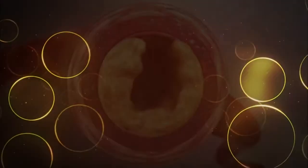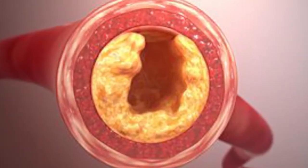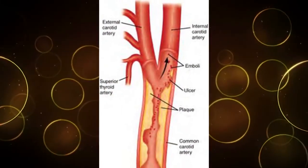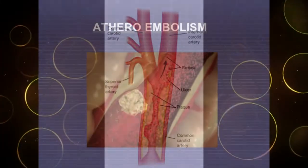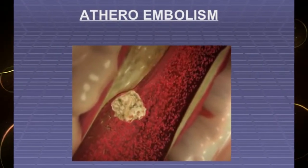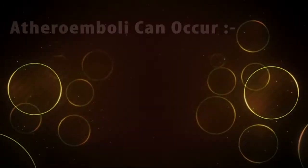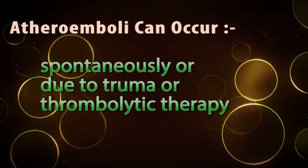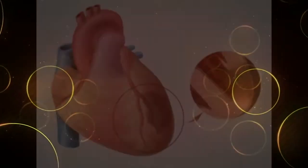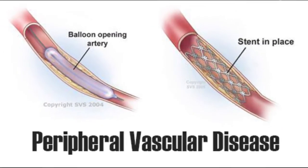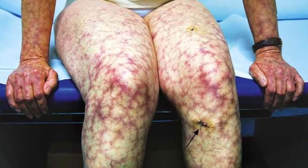Atheroembolism, also called cholesterol embolism, occurs when cholesterol is released, usually from atherosclerotic plaques, and travels as an embolus in the bloodstream, causing an obstruction in blood vessels. It can occur spontaneously or due to tumor or thrombolytic therapy. Effects include ischemia to organs, peripheral vascular disease, and livedo reticularis.